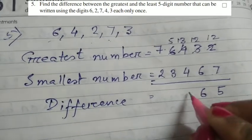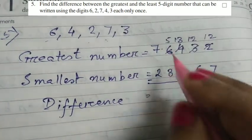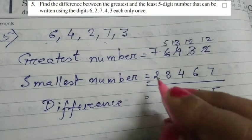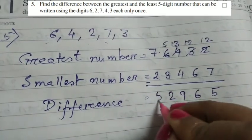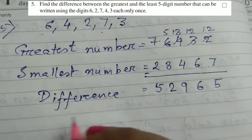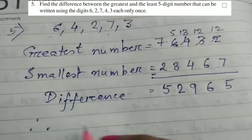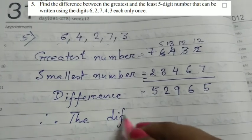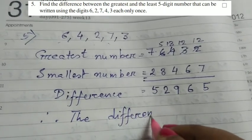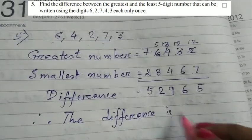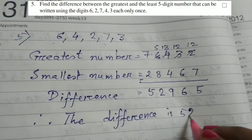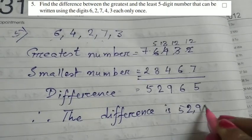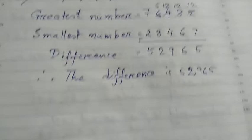13 minus 4 makes 9. And here, 3, 4, 5, 2 and 5, 6, 7. Therefore, the difference is 52,965.